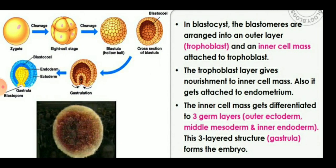In the blastocyst, the blastomeres are arranged in an outer layer and an inner cell mass, which is attached to the trophoblast. The trophoblast layer gives nourishment to the inner cell mass and also attaches to the endometrium. The endometrium is the innermost lining of the uterus where the trophoblast attaches. The inner cell mass then gets differentiated into three germ layers: the outermost is called the ectoderm, the middle layer is the mesoderm, and the innermost is the endoderm.